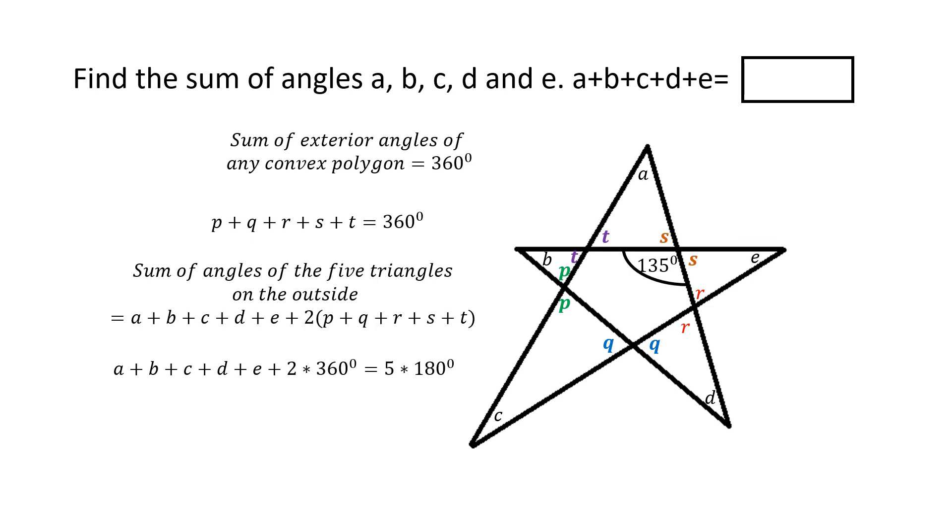On the left-hand side, I have A plus B plus C plus D plus E plus 2 times 360 degrees. And on the right-hand side, I have basically 5 times 180 degrees. That's basically the collective sum of angles of five triangles, which should be equal to 5 times 180.